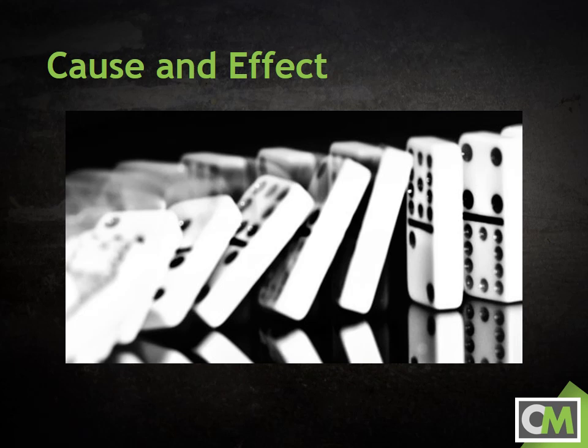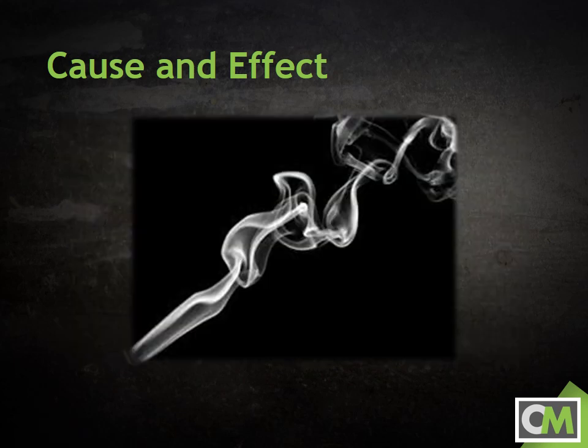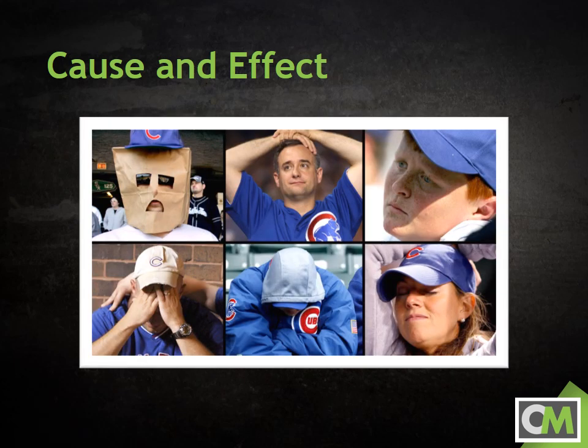Some speeches break down information using a cause and effect pattern. Speeches using cause and effect organization typically have two main points, one discussing the cause of an event and another discussing the effect. Depending on the topic, cause and effect can be used effectively in either informative or persuasive speeches. If the cause and effect are both known and agreed upon, such as the connection between prolonged tobacco use and an increased risk of cancer, this pattern could be used in an informative speech. If either is debatable, however, like the curse of the goat being responsible for the long drought between World Series championships for the Chicago Cubs, the speech would have to be seen as a persuasive effort.